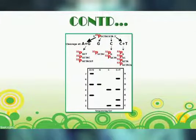The next step is electrophoresis and autoradiography. The reactions are loaded onto a high-percentage polyacrylamide gel to differentiate fragment sizes, and the fragments are visualized with the help of the radioactive tag — a process known as autoradiography.